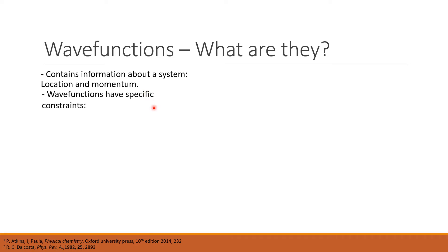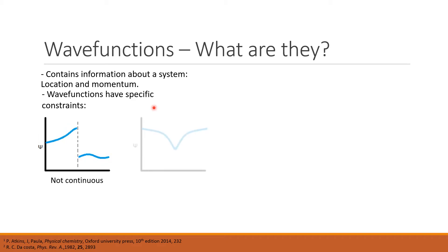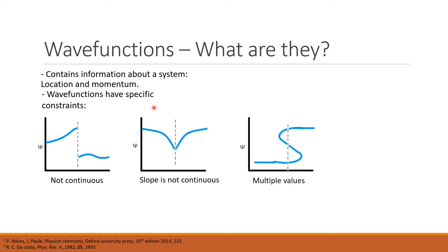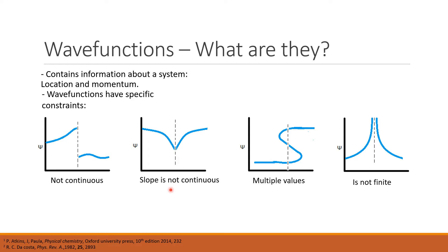Wave functions must also satisfy specific constraints. The first constraint is they must be continuous. The second is they must have a continuous slope. The third is they must be single valued, and the fourth is they must be finite. As you can see, all four of these wave functions do not satisfy these constraints in one way or another, and are therefore not viable wave functions.